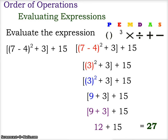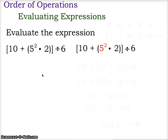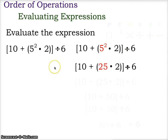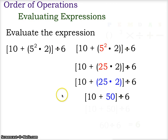Let's look at one more example: 10 plus the quantity 5 squared times 2 in parentheses, all in brackets, divided by 6. We start inside the parentheses and do the exponent first — 5 squared gives us 25. Now we have 25 times 2 inside the parentheses, giving us 50. So we now have 10 plus 50 in brackets, divided by 6.